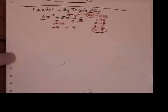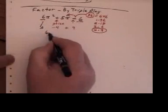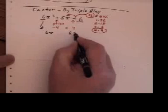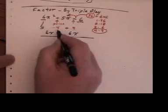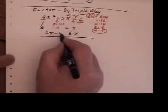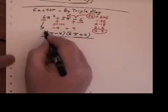So now let's start our triple play. Take the 6x² and write it down as 6x, 6x, and 6. Then drop the negative 4 here and the plus 9 there. Throw in your brackets.